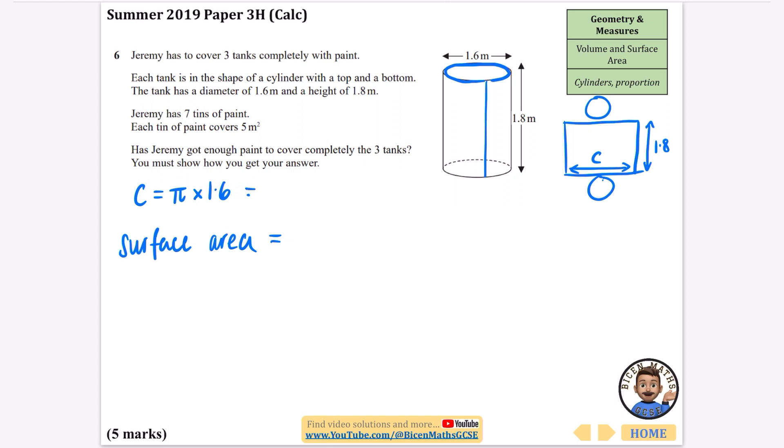The circumference is π multiplied by the diameter, which is π times 1.6. I'm going to leave it as 1.6π for now. For the surface area, we have 1.8 multiplied by C, which is 1.6π, then add on the area of the two circles. The radius is half of 1.6, which is 0.8, so it's π × 0.8² times 2.